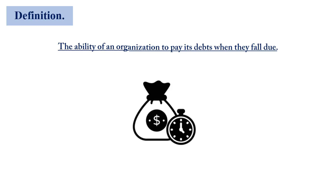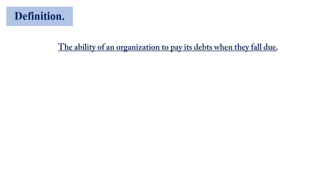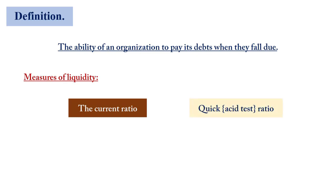So normally you are able to settle your short-term debt basically with your short-term resources. Let's look at measures that can help us assess the liquidity of a business. We will look at the current ratio, otherwise known as the working capital ratio, then we look at the quick ratio or the acid test ratio.